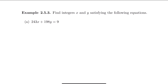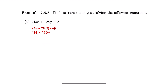We divide 243 by 198, so the quotient is 1 and the remainder is 45. Then we use 45 to divide 198, so we have 198 equal to 45 times 4 — because 4 times 45 is 180 — and the remainder turns out to be 18.